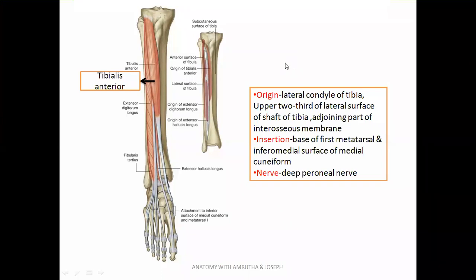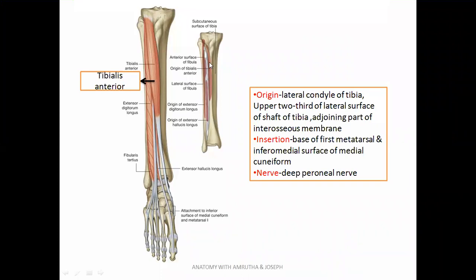Tibialis anterior is a muscle seen on the anterior aspect of the tibia, originating from the lateral condyle of the tibia, the upper two-thirds of the lateral surface of the shaft of tibia, and the adjoining part of the interosseous membrane — the membrane connecting the tibia and the fibula. All of this area gives origin to tibialis anterior.